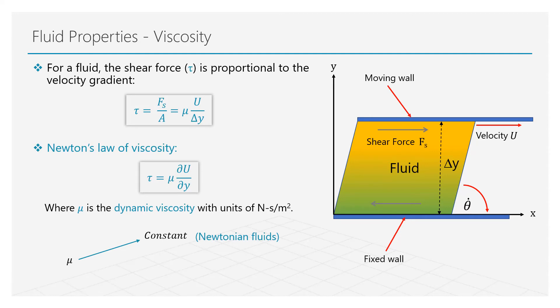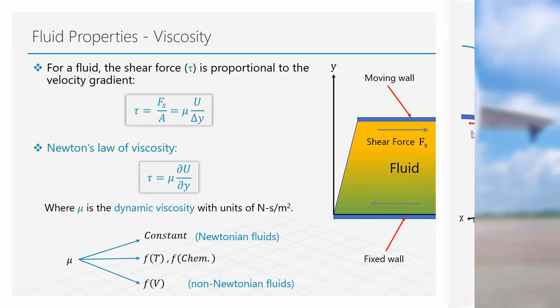Viscosity of a fluid can also be a function of temperature and chemical composition. However, there are other fluids for which viscosity is a variable and is dependent on the velocity of the fluid. These fluids are described as non-Newtonian fluids.